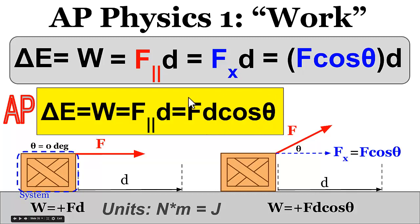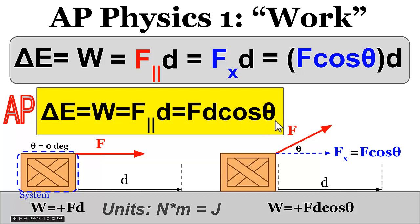This formula works for any situation, whether the force is in the same direction as the displacement or the opposite direction. If the component is in the same direction, the angle is less than 90 degrees and the work is positive — energy is transferred into the system. If the angle between the displacement and the force is greater than 90 degrees, the cosine automatically gives you a negative sign, indicating energy is being transferred out of the system and negative work is being done.